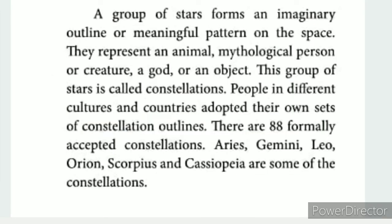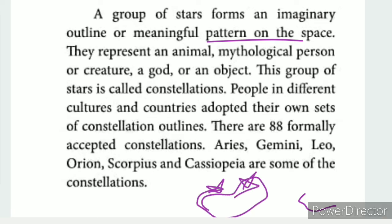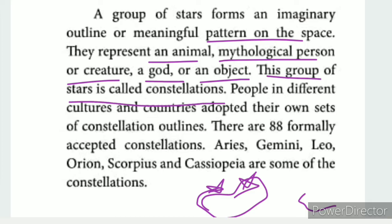Constellations are an imaginary outline or meaningful pattern in the sky. They represent an animal, a mythological person or creature, a god, or an object — such as a dragon or other figures. This group of stars is called a constellation.